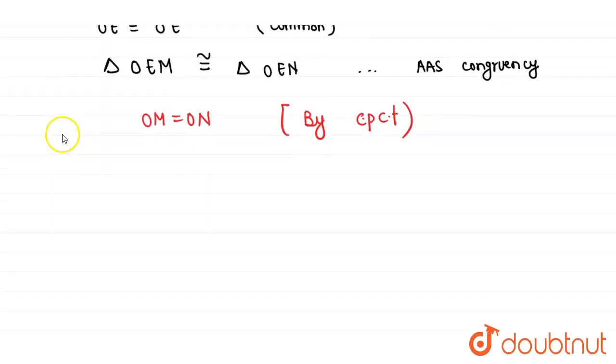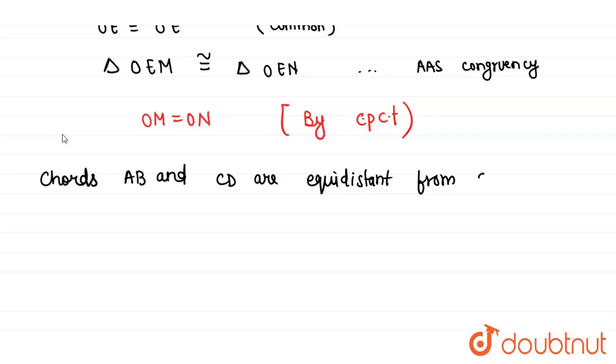Therefore, since chords AB and CD are equidistant from center, because OM is equals to ON, therefore they are equidistant from the center.